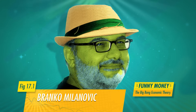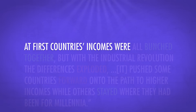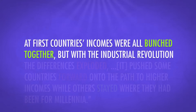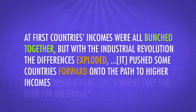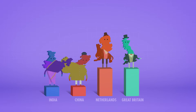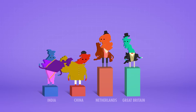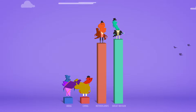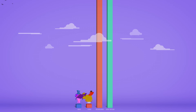Branko Milanovic, an economist who specializes in inequality, explained all this by describing an economic big bang. At first, countries' incomes were all bunched together, but with the Industrial Revolution the differences exploded, pushing some countries forward onto the path to higher incomes while others stayed where they had been for millennia. According to Milanovic, in 1820 the richest countries — Great Britain and the Netherlands — were only three times richer than the poorest, like India and China. Today the gap between the richest and poorest nations is like 100 to 1. The gaps are getting bigger and bigger.